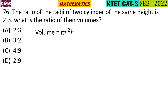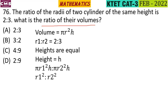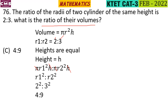The volume is pi r square h. For the two cylinders, V1 to V2 equals pi r1 square h to pi r2 square h. Pi h is common, so we get r1 square to r2 square. Since r1 to r2 is 2 to 3, we get 2 square to 3 square, which is 4 to 9. Option C.